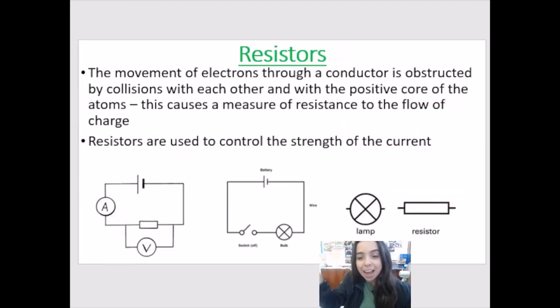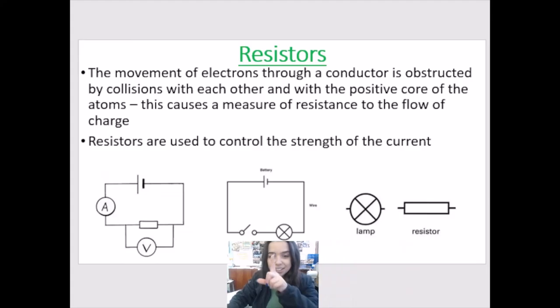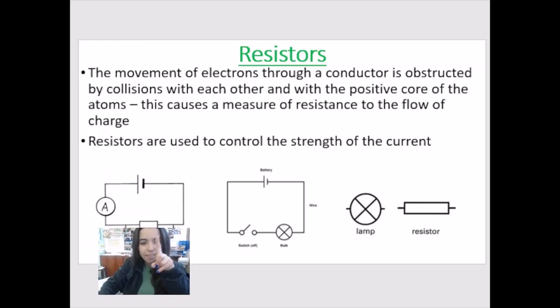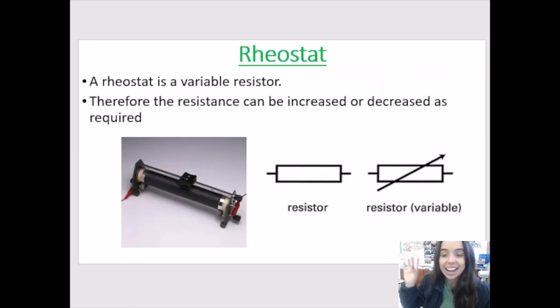This is what a light bulb looks like when it's in a circuit, as you can see over here. The little circle with the line, the cross through it. And over here, we have a resistor. And resistors are basically used to control the strength of the current. As I mentioned, rheostats are resistors that we can vary the resistance. It's a variable resistor. We can increase the resistance or decrease it.